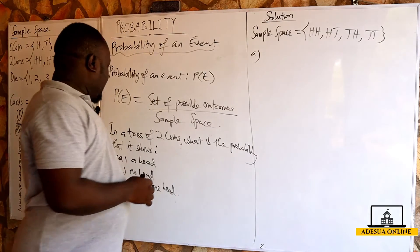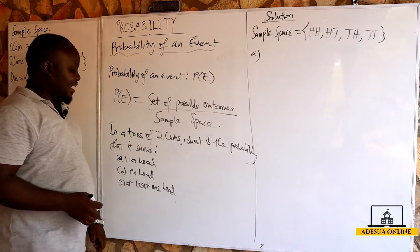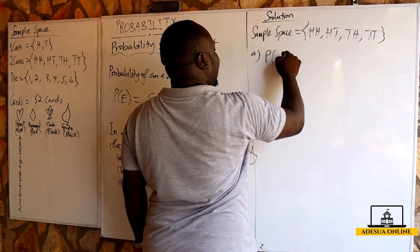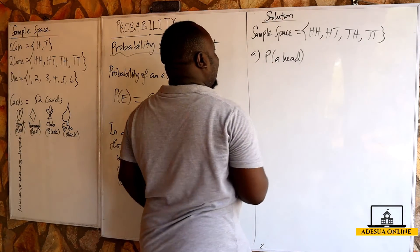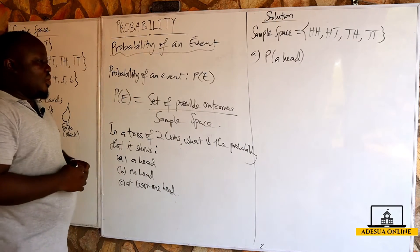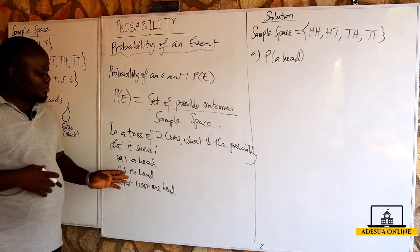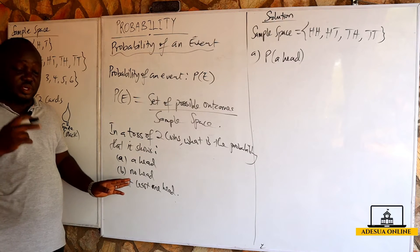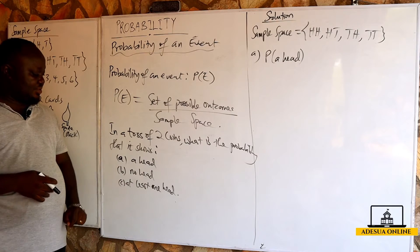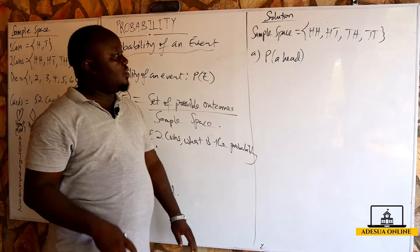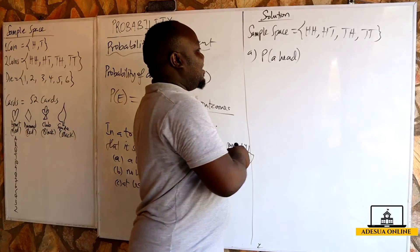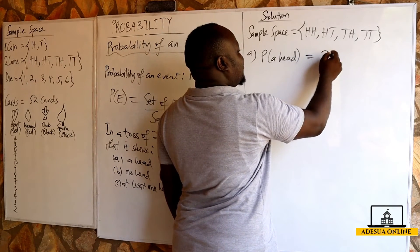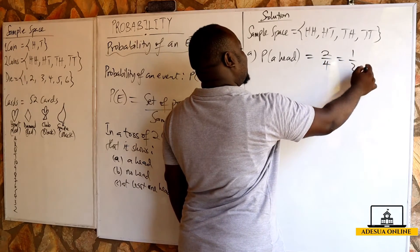Now, the probability that it shows a head — meaning exactly a single head — when we toss two coins. Showing a head, we have HT and TH. So that gives us 2 over 4, which is equal to 1 over 2.